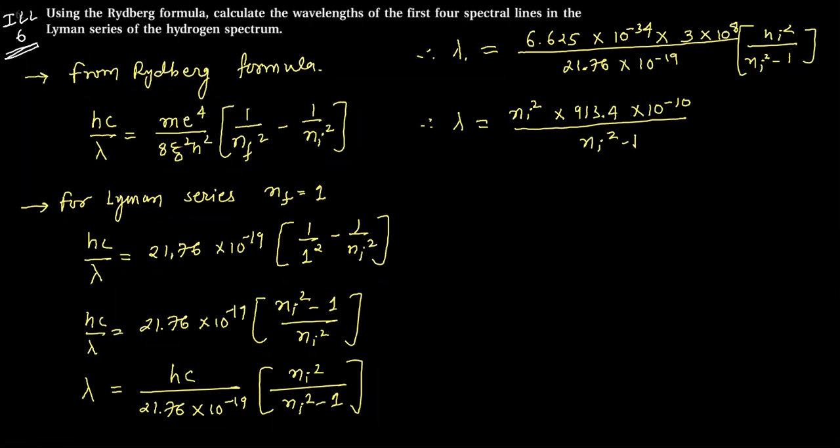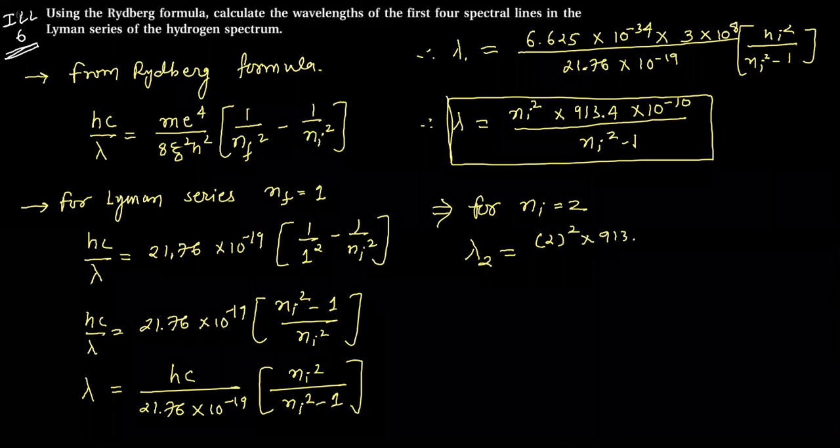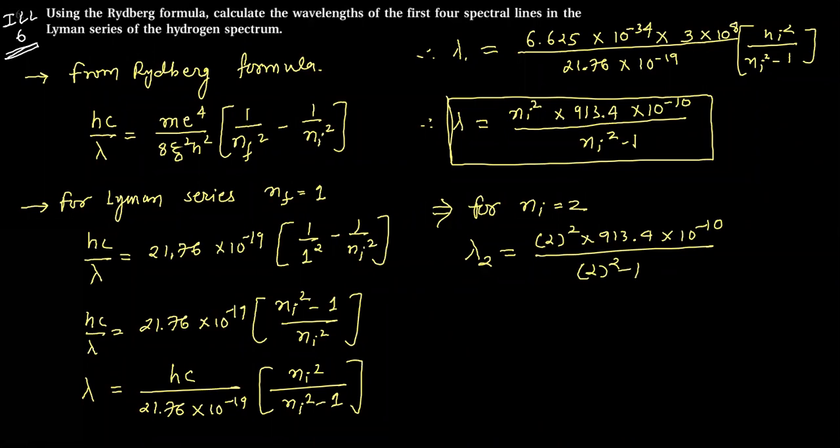The answer above is 913.4 into 10 to the minus 10. This is our standard equation for lambda. Now we're asked for the first four. For first, put n i equals 2. Lambda 1 equals 2 squared minus 1, which is 1217.8 into 10 raised to minus 10. So lambda 2